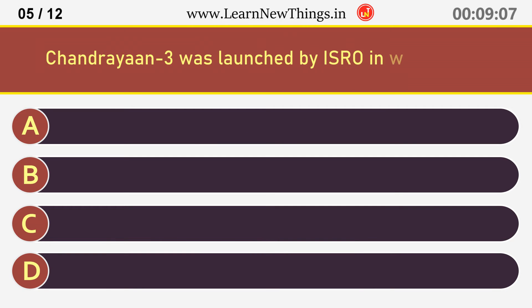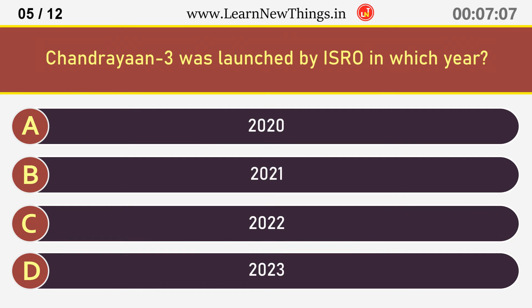Chandrayaan-3 was launched by ISRO in which year? 2023.